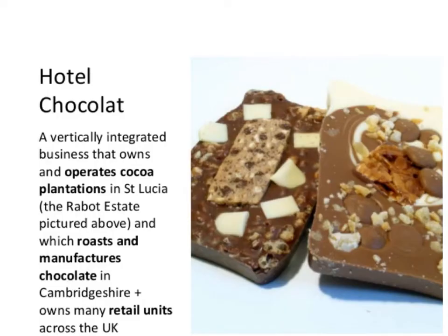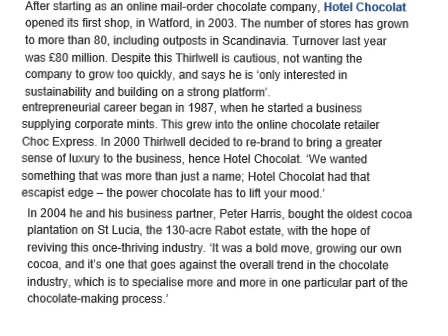The first example is a vertical integration classified as backwards integration, looking at the well-known UK chocolate company Hotel Chocolat. If you're not aware of the company, they're a retailer on the high street that sells premium chocolate. What they decided to do — and the reason why it's a backwards integration — is that they acquired the cocoa plantations that actually supplied them with the cocoa for their premium chocolates. This article discusses the merger and gives an idea as to why they decided to do so.